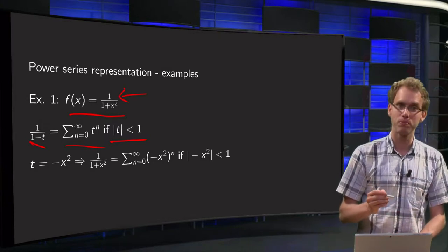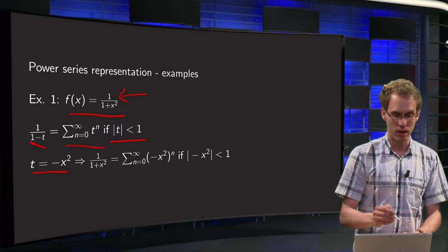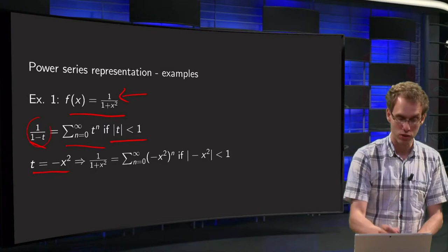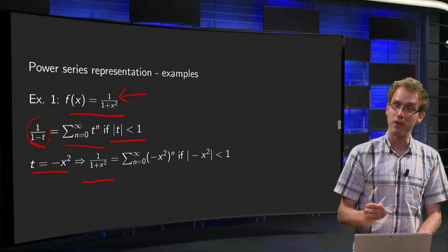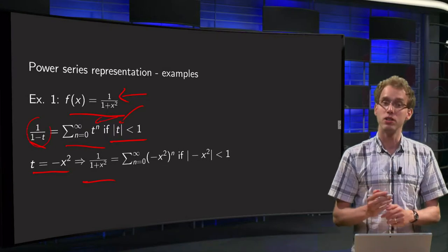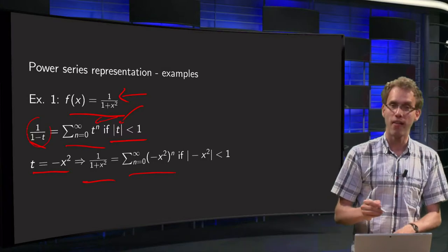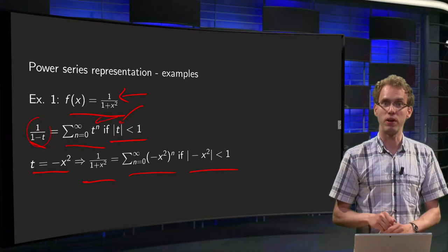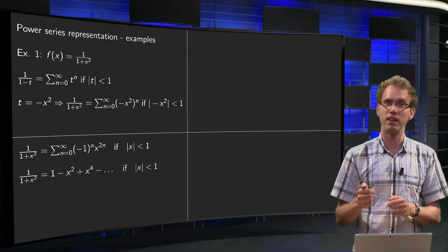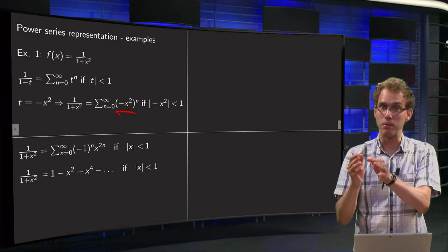So what can we do? We can substitute t equals minus x squared. Then on the left-hand side we get 1 over 1 minus minus x squared, which equals 1 over 1 plus x squared. Substituting into the series, we get the sum from n equals 0 to infinity of minus x squared to the power n, if absolute value of minus x squared is smaller than 1. We can simplify: minus x squared to the power n equals minus 1 to the power n times x to the power 2n.